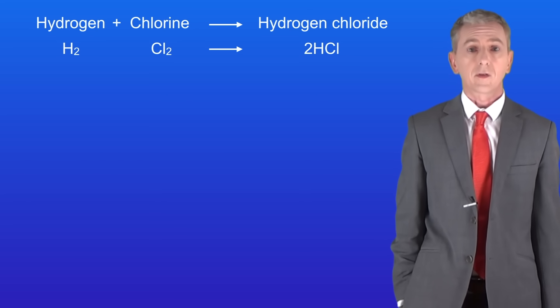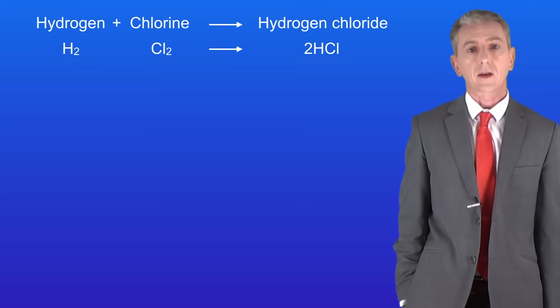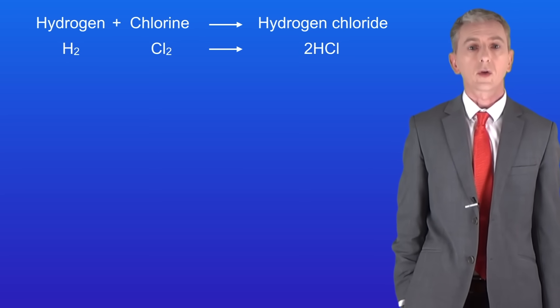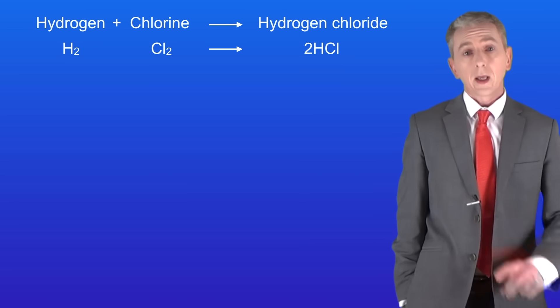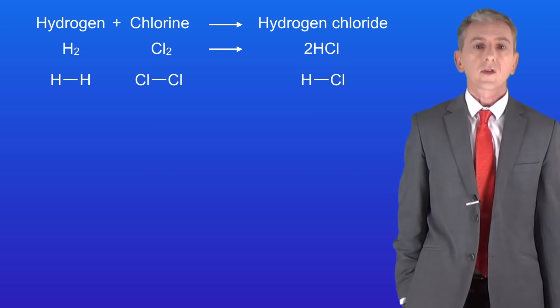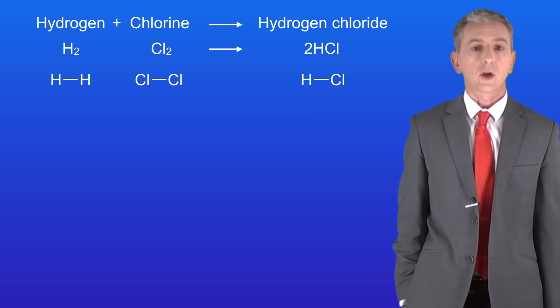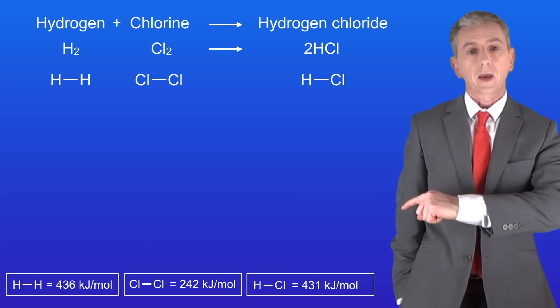To do this, we need two pieces of information, and both of these are given in the exam. First, we need the structures of the molecules involved—that way we can see all the different bonds. So here are the structures. Secondly, we need to know the energy value for each bond. So here they are.